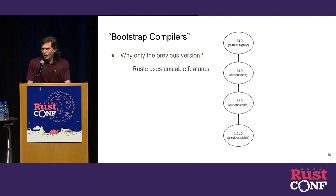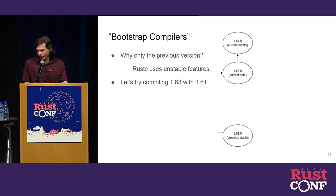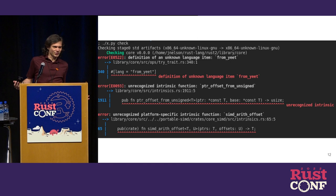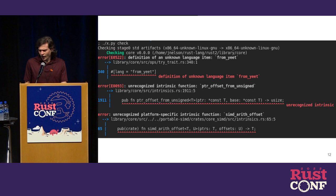Let's try it out and see what happens. We're going to build the current beta compiler, 1.63, with the previous stable compiler. That's only two versions back — how bad could it be? If we look at the error, it's telling us there's something called a language item that we need to know, called from_yeet, and we don't know what from_yeet is. That's something in 1.62, not in 1.61. So even in that short amount of time we're already running into errors, and because we depend on those unstable features in the compiler, we can't use that older version.